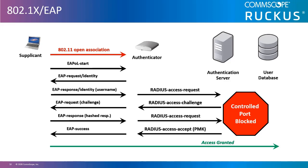The 802.11i amendment was ratified for security and has since been rolled up into the 802.11 standard. It specifies the ability to use 802.1X port-based access control and extensible authentication protocol, or EAP, to provide user authentication and dynamic key distribution. This process occurs after the open association process completes. 802.1X restricts a client's access to the network until the station has been fully authenticated by an authentication server, which is usually located on the wired network segment.